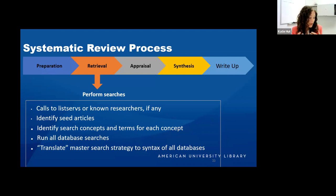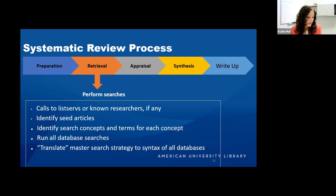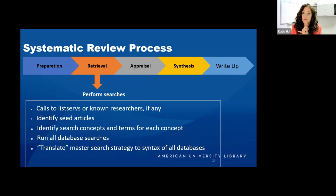In terms of identifying search concepts and terms, it's necessary to think really critically about your search terms. Using a framework like PICO can help you identify the main components in your question. Using keywords can help broaden your search — you'll use keywords and then synonyms for those keywords. Generative AI like ChatGPT can be really helpful in coming up with those synonyms.